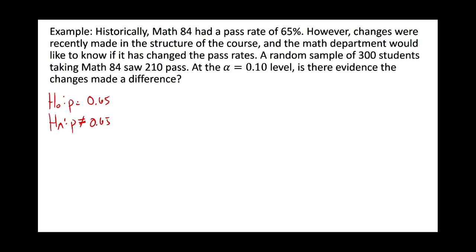Based on the results, there were 300 students and 210 passed, so our p-hat is 210 out of 300, which is 0.70. In our sample the proportion was higher than 65%. The question is: is that far enough from 65% for us to be comfortable declaring the proportion has actually changed?